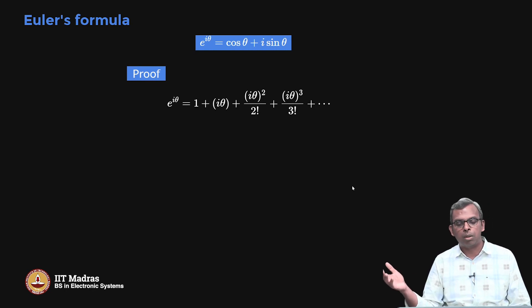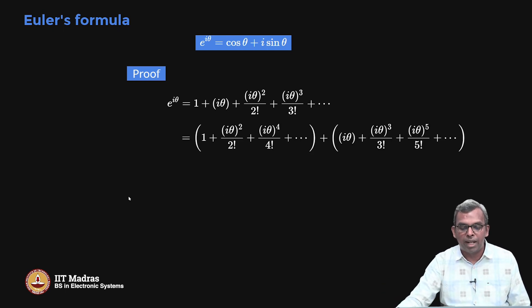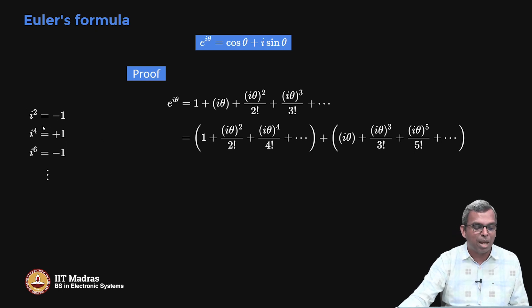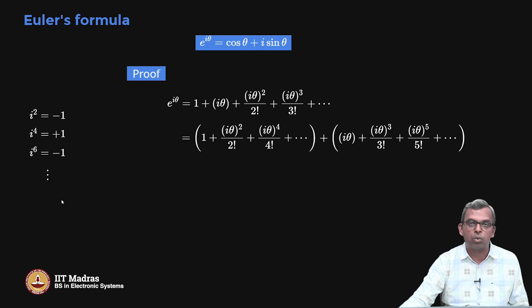E^(iθ) expands as 1 + iθ + (iθ)²/2! + (iθ)³/3! and so on. I group all the even powers together and all the odd powers together. Now, i² = −1 by definition, i⁴ = +1, i⁶ = −1 again. So even powers of i cycle through −1, +1, −1, +1. For odd powers: i¹ = i, i³ = −i, i⁵ = +i, i⁷ = −i, so they oscillate between i and −i.